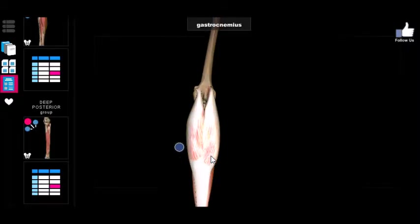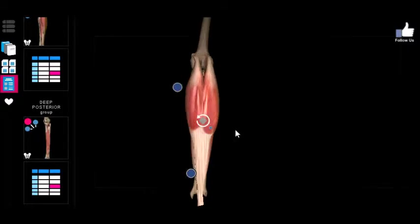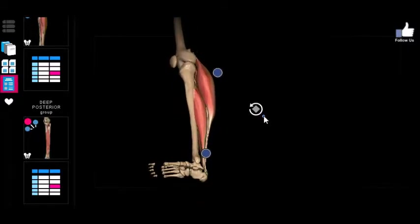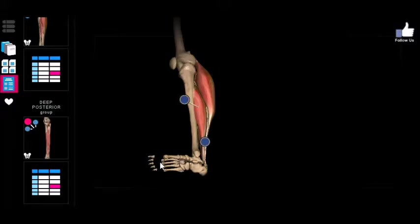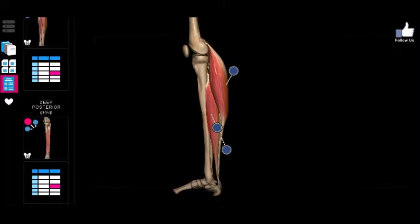The common function that all of these muscles share — both superficial and deep — is plantar flexion of the foot: pointing the toe like a ballet dancer. The only exception to the plantar flexion theme is the popliteus, which doesn't cross the ankle joint or touch the foot. It only crosses the knee joint, so its action is flexion of the knee.